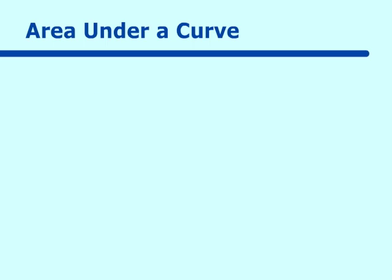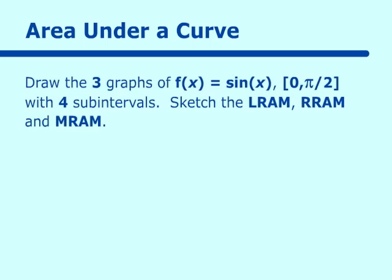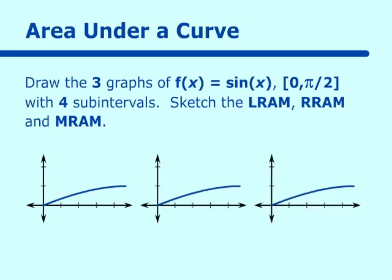Let's go through this concept more to make sure we have it nailed. If we draw three graphs of sin x from 0 to pi over 2 with four subintervals, we can sketch LRAM, RRAM, and MRAM. For LRAM, it starts at 0 — since that value is 0, the first rectangle has area 0 — then we use subsequent heights for the remaining rectangles. One rectangle having area 0 means this will give us an underestimate.